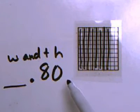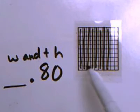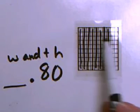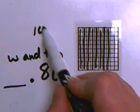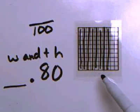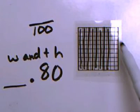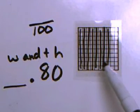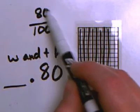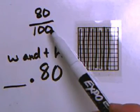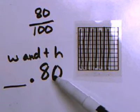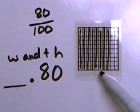If I want to write it as a fraction, I think of how many pieces my box is broken into — it's broken into 100 pieces. Out of those 100 pieces, I have 80 shaded. So my fraction is 80 hundredths. As a decimal, this is 80 hundredths, and as a picture, this is 80 hundredths.